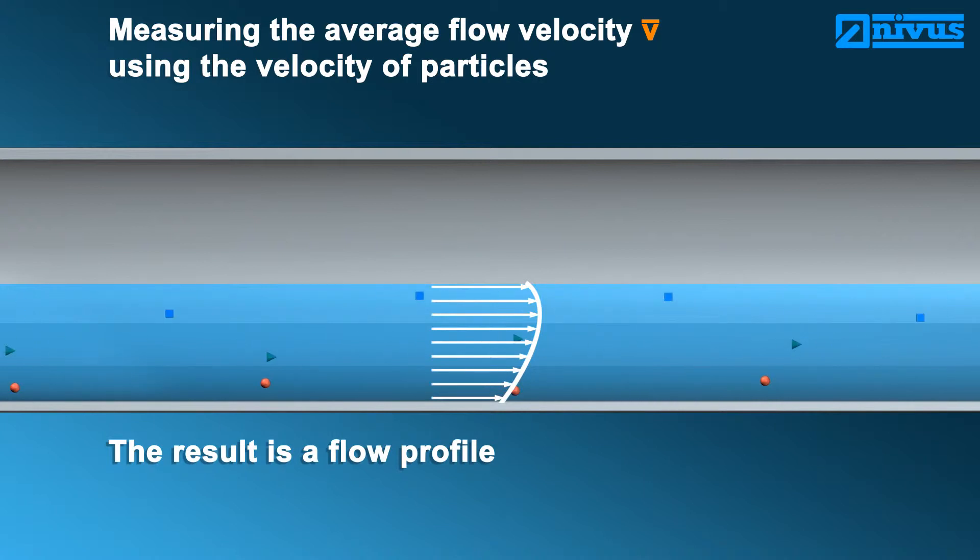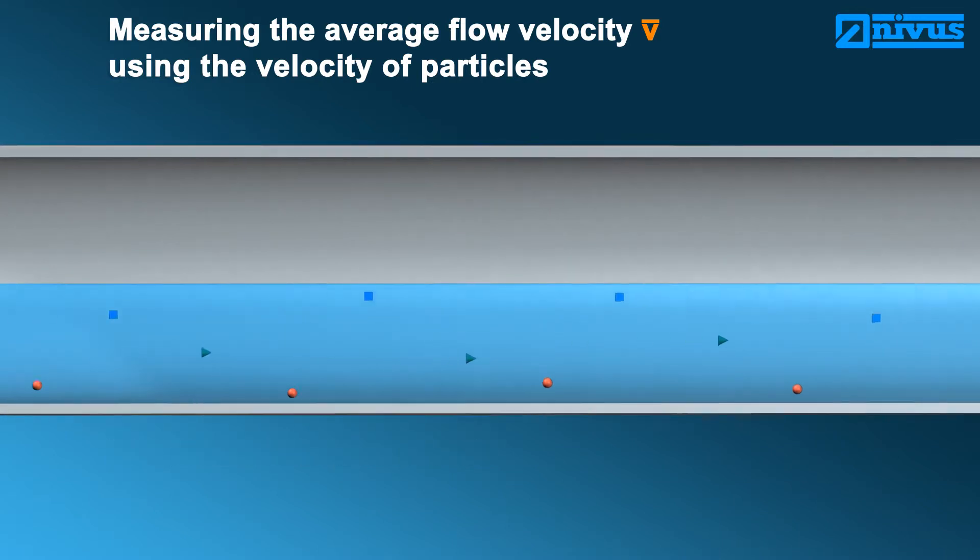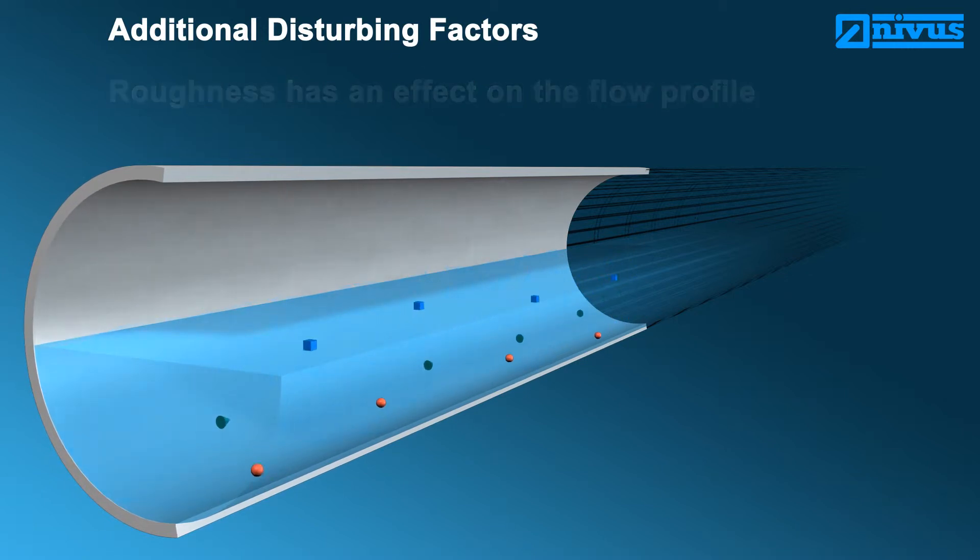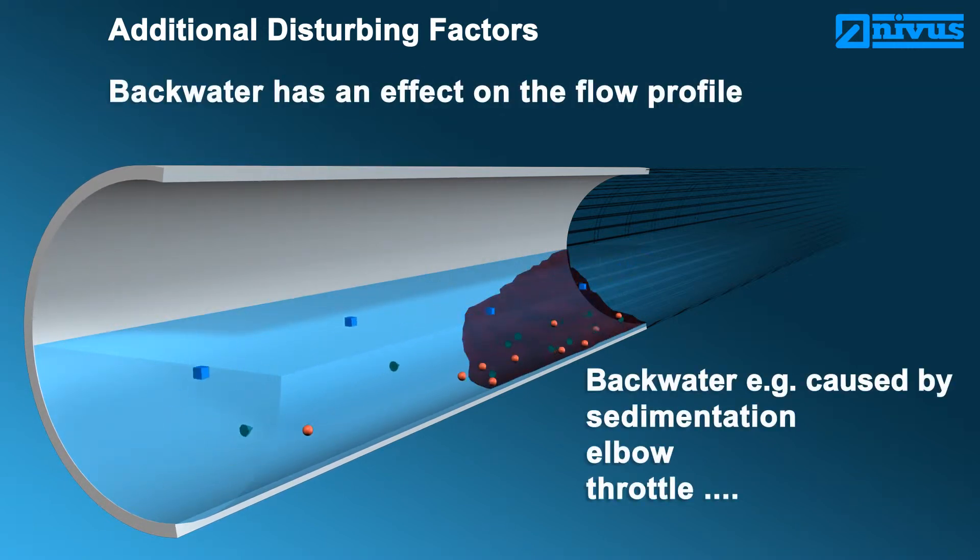This profile depicts the flow velocities related to the levels. Miscellaneous factors affect this flow profile: disturbing, free discharge, or may result in the formation of backwater. Such disturbing factors may be pipe roughness and varying sedimentation, solid concentration, or influences due to construction such as elbows and throttle equipment.